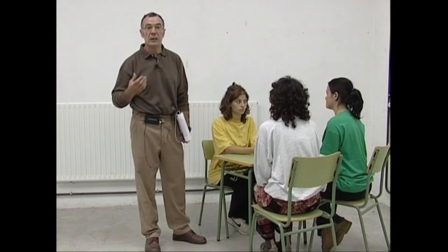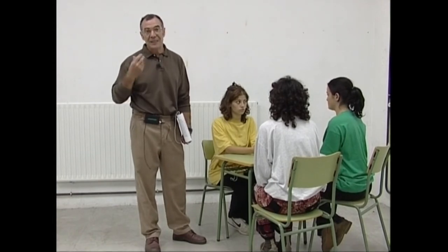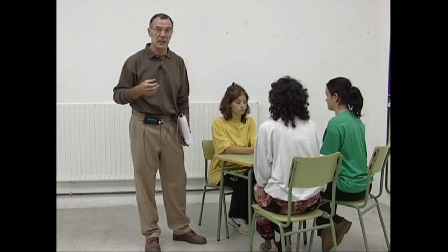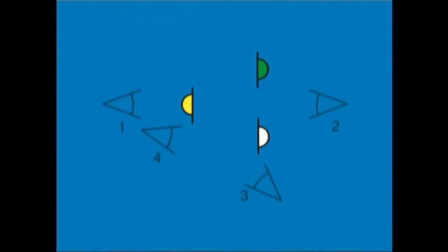Ikusi dugun bezala, antzezpena iru aktorek jokatzen dutenean taldeko planoen bitartez filma dezakegu. Plano horietan, batzuetan iru aktoreak agertuko dira, beste batzuetan soilik bi. Taldeko planoak hartzeko, kamera kanpoaldeko angelu kontrajarrietan kokatu dugu. Kameraren kokaguneek aktoreak era honetan hartzeko aukera eskaintzen digute.